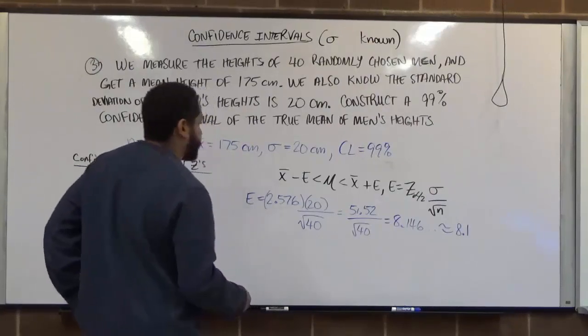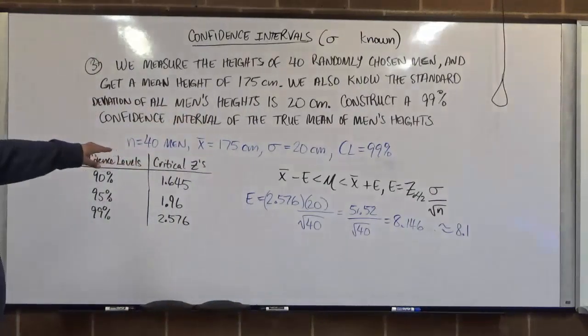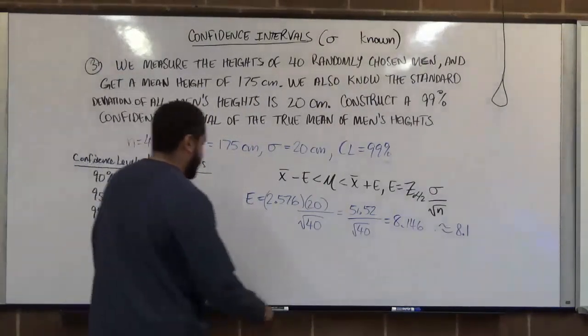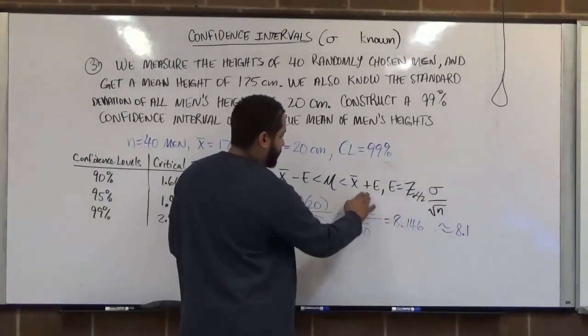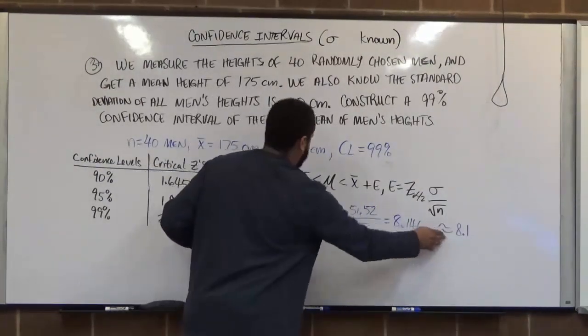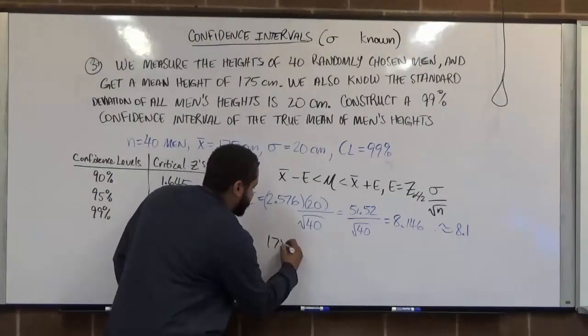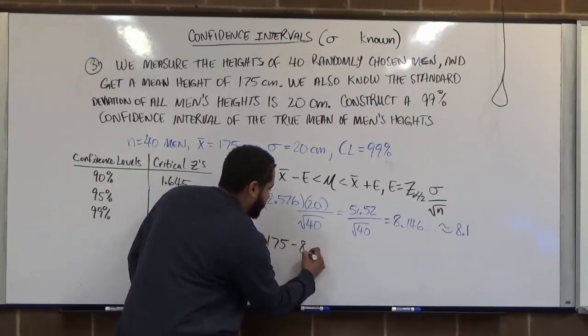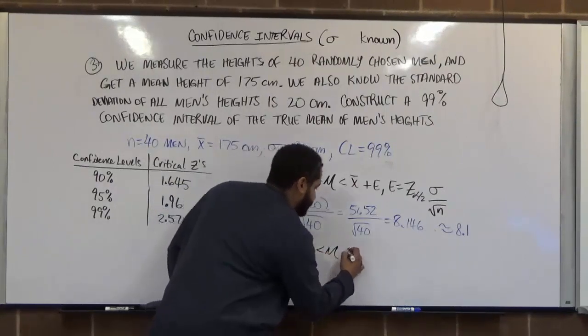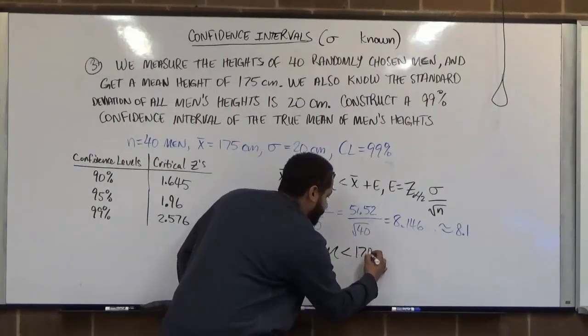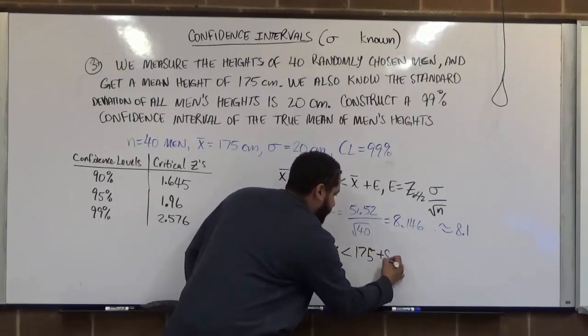Now, the next step is to take our mean, our best point estimate, and generate this actual formula by plugging in our E value of 8.1 into this equation with 175. So now we have 175 centimeters minus 8.1 less than mu less than 175 plus 8.1.